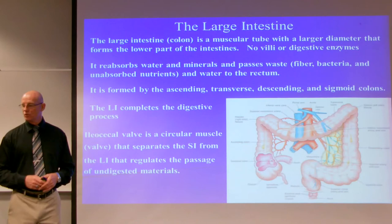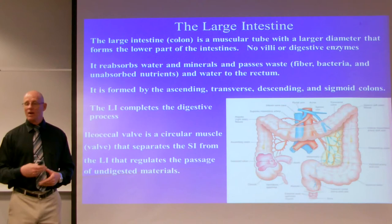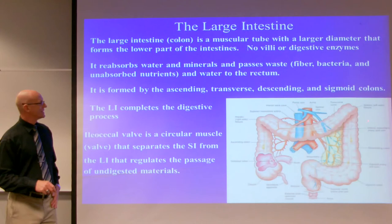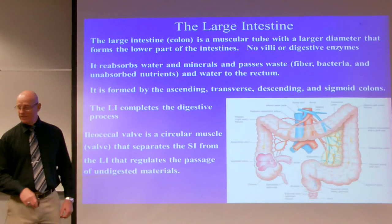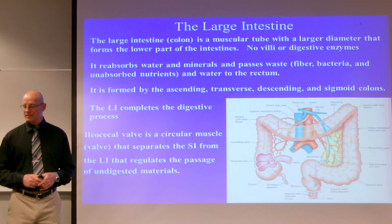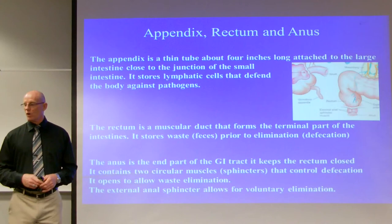The large intestine, also known as the colon, is a muscular tube with a larger diameter than the small intestine. There are no villi or digestive enzymes released in the large intestine. It reabsorbs water and minerals and passes waste, fiber, bacteria, and unabsorbed nutrients to the rectum. It is formed by the ascending colon, transverse colon, descending colon, and sigmoid colon. Nutrients absorbed in the large intestine are minimal: sodium, potassium, some fatty acids, and a little water.